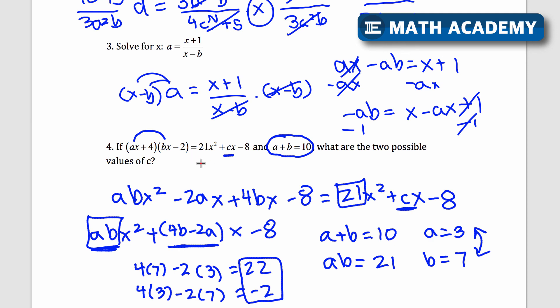Again, the key is to put both sides into standard form and compare how many x squareds you have, how many x's you have, and you can get clues as to how you can solve the problem from that.